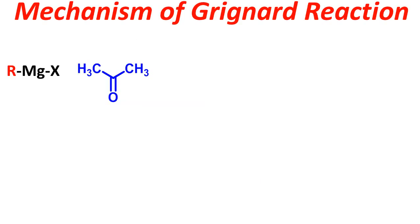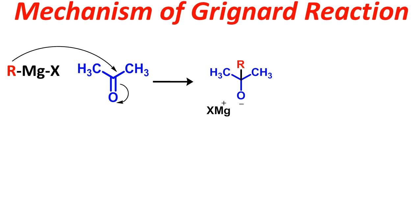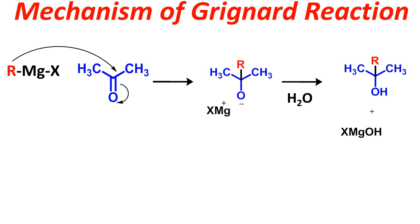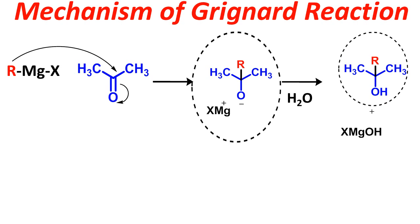When you have RMgX and a ketone — say acetone as in this example — the R group, having a negative charge, attacks the partially positive carbonyl carbon, and the electron density moves onto the oxygen. The counter ion is Mg²⁺. When you work up the reaction — that is, quench it with water under acidic conditions — the Mg²⁺ counter ion is replaced by hydrogen, giving XMgOH and the tertiary alcohol as product.